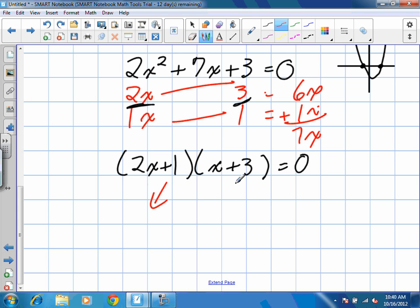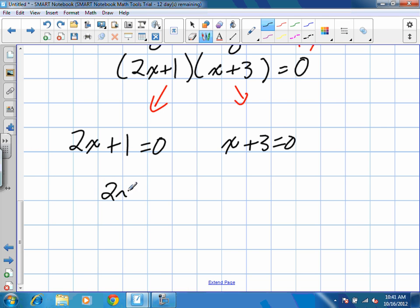We're going to be left with 2x plus 1 is equal to 0, so in other words, if this bracket ended up being 0, or x plus 3 equals 0, in other words, if this bracket was 0. When we solve those, this will become 2x is equal to negative 1, which is x is equal to negative 1 half. And in the other example, x will be equal to negative 3 when we bring it over.